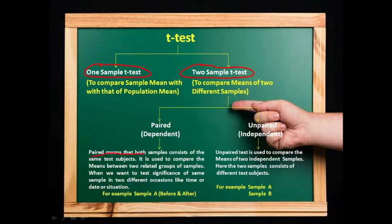In a paired T-test, both samples consist of the same test subjects. It is used to compare means between two related groups of samples — for example, when we want to test significance of the same sample on two different occasions like before and after a treatment. This is an example of a paired sample T-test.